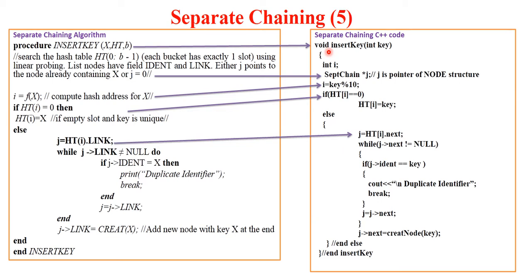If not, then we will use a pointer to the linked list at that particular hash address. Now, till we arrive to the last node, we will keep traversing.